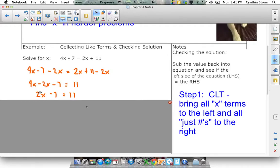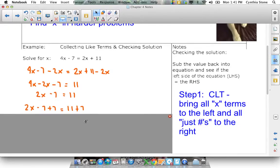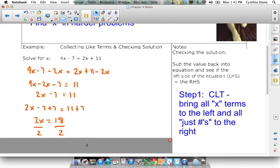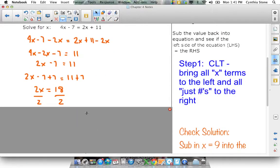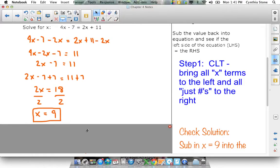Because 4x minus 2x is 2x. And then I got to get the 7 over. The opposite operation is add. So add 7 to both sides. And you end up with 2x equals 18. 2 is multiplied by x, so I get rid of the 2 by dividing both sides by 2. And you end up with x equals 9. So that's the solution to a multi-step problem.